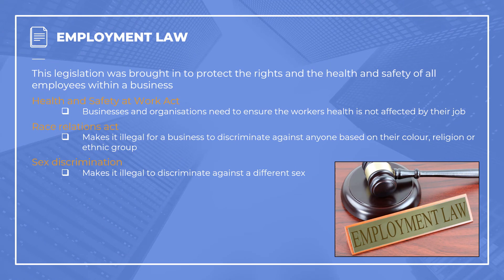Starting with employment law — there are many different laws you as a business need to be aware of to make sure your employees are safe and protected. The most obvious one is the Health and Safety at Work Act, which has been around since the early 1970s. It ensures all your workers are safe and their health is not affected by the job, meaning you must provide protective clothing and gear if needed, and ensure regular breaks. There's also the Race Relations Act, making it illegal to discriminate against anybody, and the Sex Discrimination Act, making it illegal to discriminate on the basis of sex — both have significant impacts on a business.